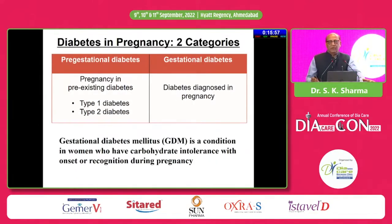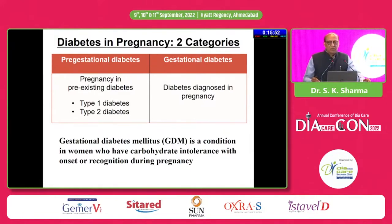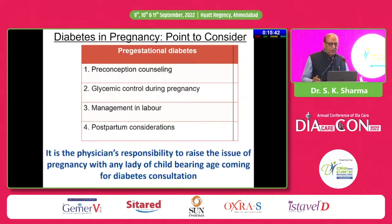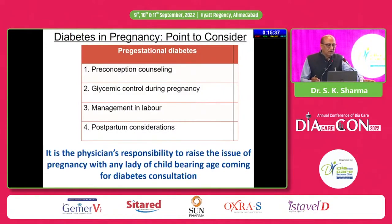Whenever we have diabetes in pregnancy, we have to differentiate whether it is a pre-existing diabetes and now the lady is pregnant, or the diabetes was first time identified during this pregnancy — what we label as gestational diabetes.